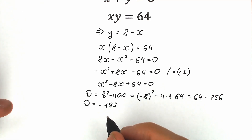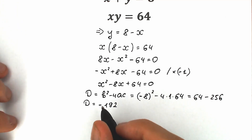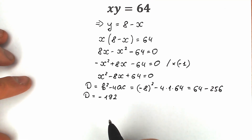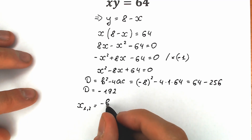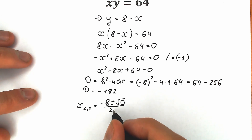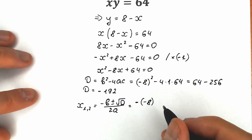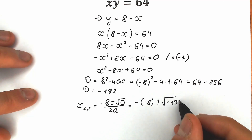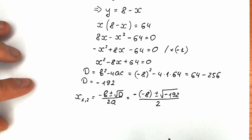A negative discriminant implies we don't have real number roots — we will have complex roots. This is a tricky question in terms of school because students don't like complex numbers. But let's solve it and see what happens. Since the discriminant is negative, we will have complex roots. Using the quadratic formula: x₁ and x₂ equal minus b plus or minus square root of discriminant, all over 2a. Plugging in: minus (minus 8) plus or minus square root of minus 192, divided by 2 times 1 equals 2.